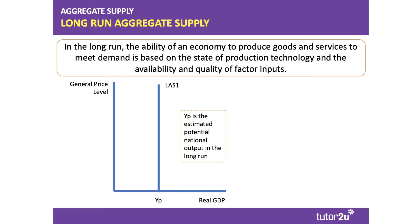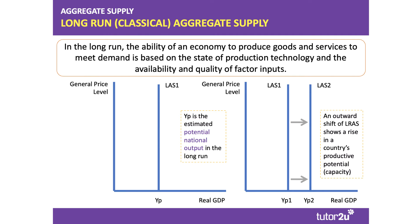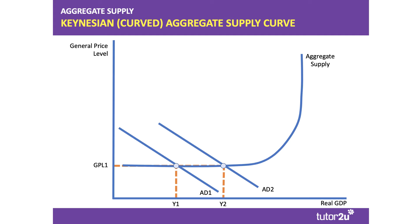The vertical long-run aggregate supply curve shown here uses a near-classical model, which assumes that changes in the general price level have no bearing on the size of a country's potential output. What you're hoping to achieve is an outward shift of long-run supply from yp1 to yp2, and economic growth is shown by that outward shift of long-run supply.